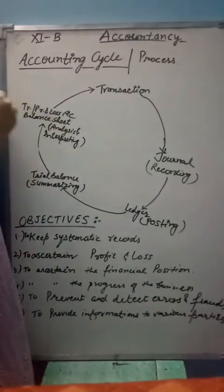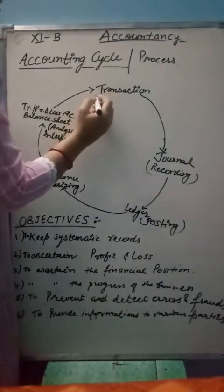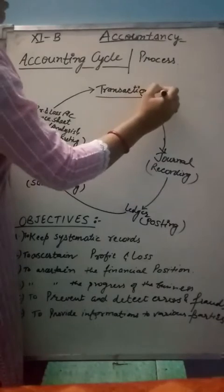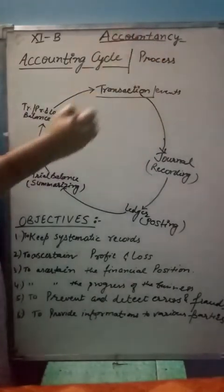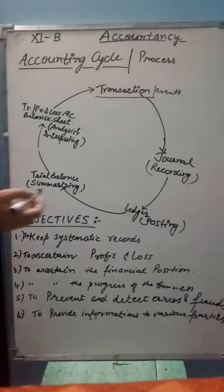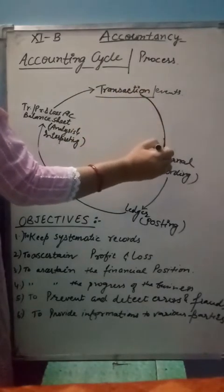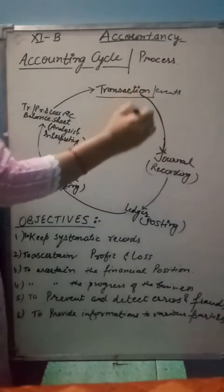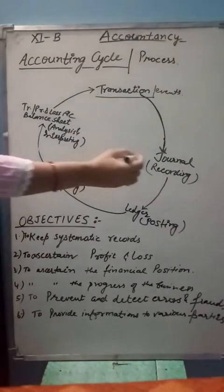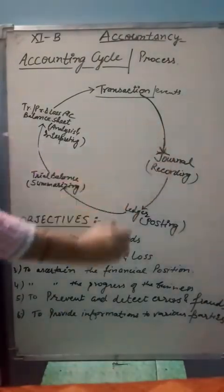The first thing we get in accounting is transactions or events. We have to recognize and identify whether this is our accounting transaction or not. Then, after getting all these transactions, we will record them in our book. What do we call the book? Journal book. Recording means journalizing.